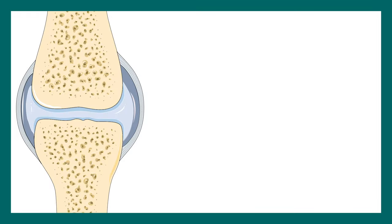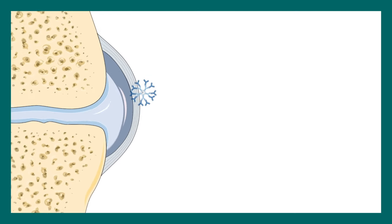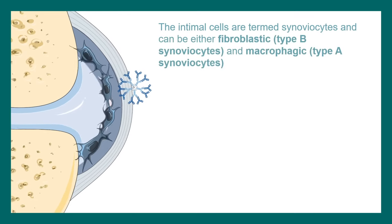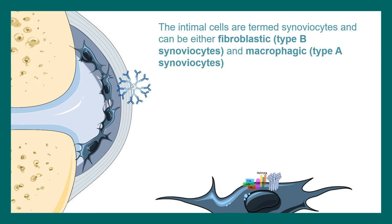Now let's put this into the context of a rheumatic or autoimmune disease. In rheumatoid arthritis, the joints of the bones are severely affected. Here is the synovial membrane, here is the fibrous capsule, and here is the synovial fluid. There are autoantibodies which damage specific cells known as synoviocytes, with complement-mediated damage occurring to these cells.